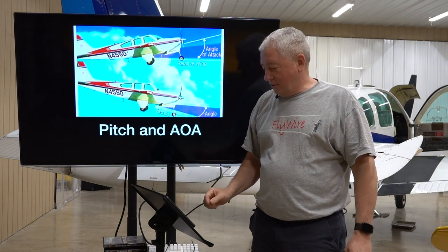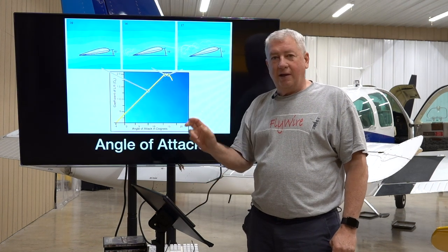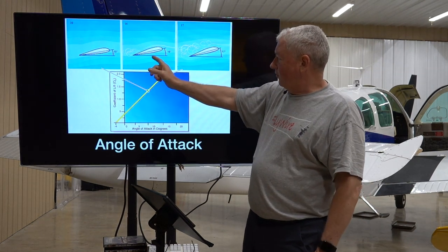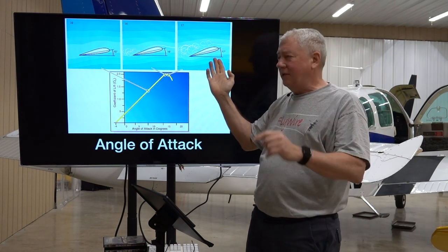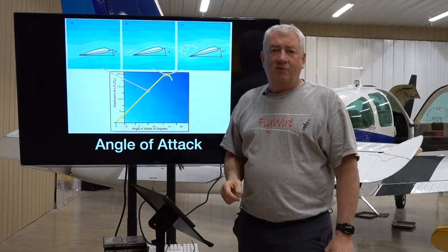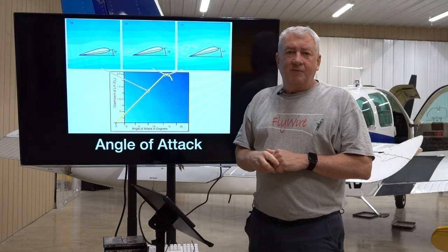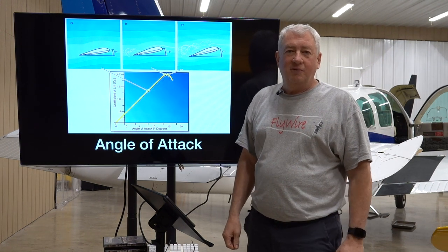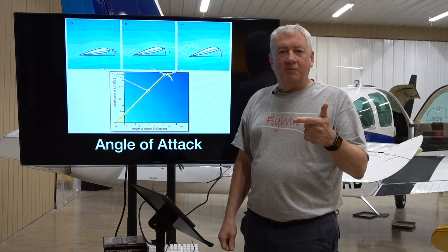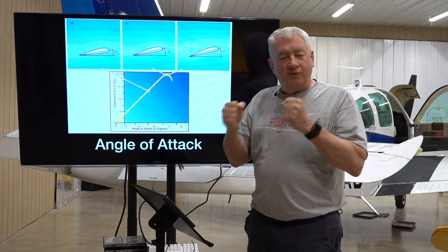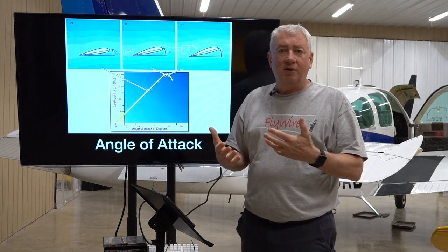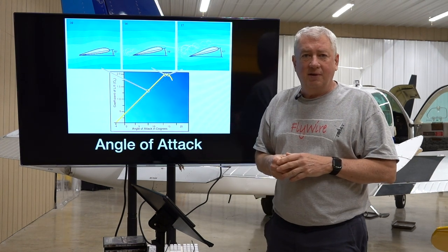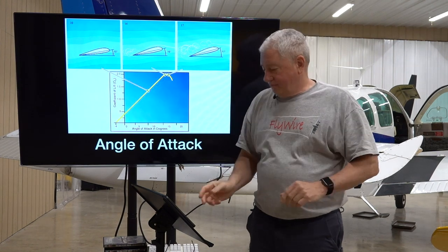At high AOA the lift curve has an abrupt break at CL max — right here at 10 degrees there's no problem, at 16 we're starting to get some boundary layer separation, and at 17 degrees — just one degree more — we get the boundary layer break and the wing is stalled. It really doesn't take much to get the boundary layer reattached. At low alpha, ailerons can control the airplane; at high AOA you want to use the rudder — that whole adverse yaw thing. High AOA, stall, yaw, spin.